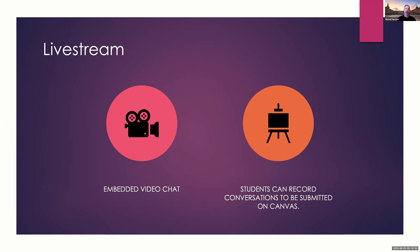Right now, if you want a student to record a conversation with another student and submit it as an assignment, they have to create their own Zoom room, make sure settings are set to download, send the link to the other student, have the conversation, save it, and then upload it. With Pronto, if they're chatting with each other and saying 'when do you want to get together?' and it's like 'how about now?' — you just click the button and it opens the video chat right then. They click record and it's done. It's amazing in that way.